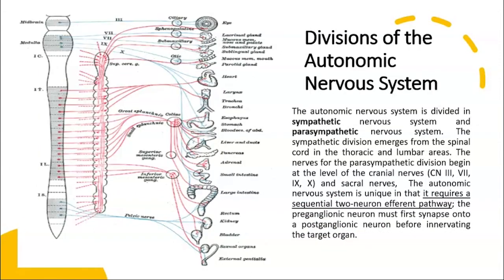Divisions of the autonomic nervous system — there are two main divisions. One of them is the sympathetic nervous system and the other one is the parasympathetic nervous system.